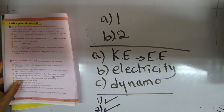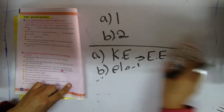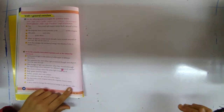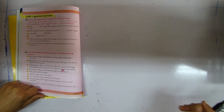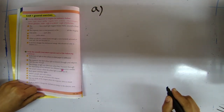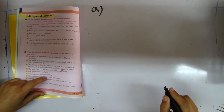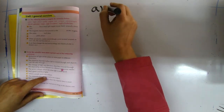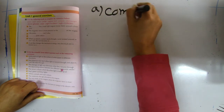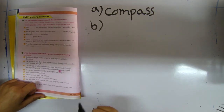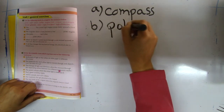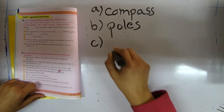Now we start unit one general exercise, page 40. Use the following words to complete the sentences. Number one: the compass has a small light magnet that moves freely around a fixed axis. Number two: the magnetic force is most powerful at the poles of the magnet. Number three: like poles repel each other.